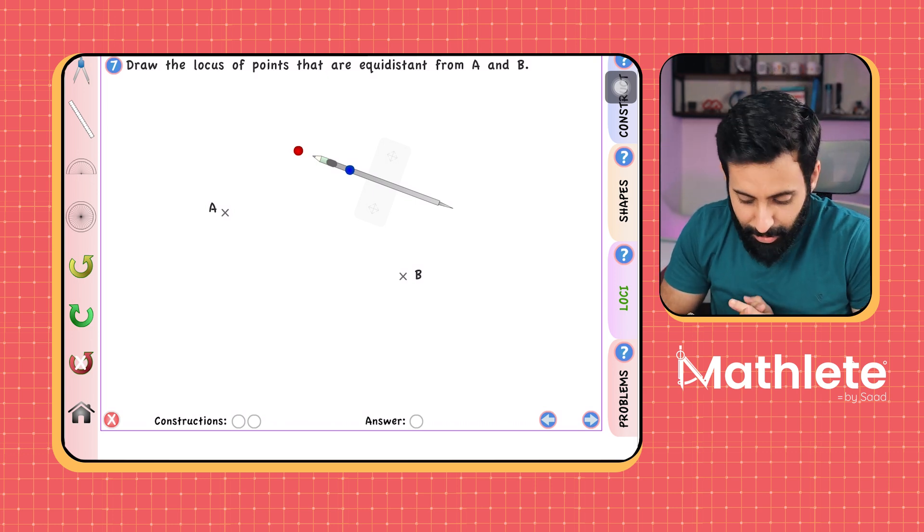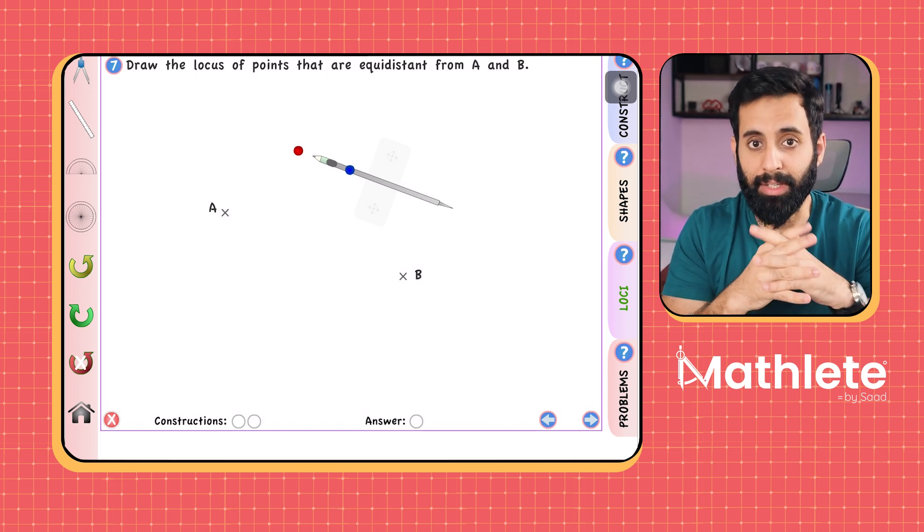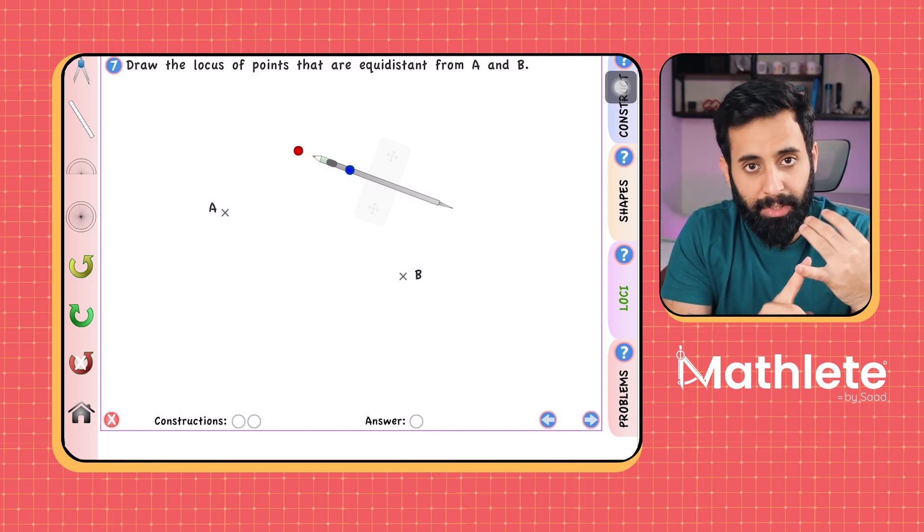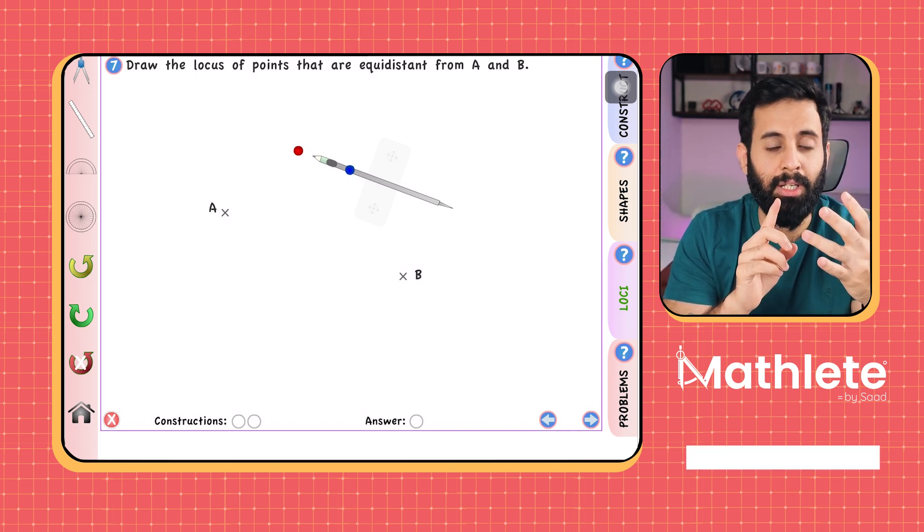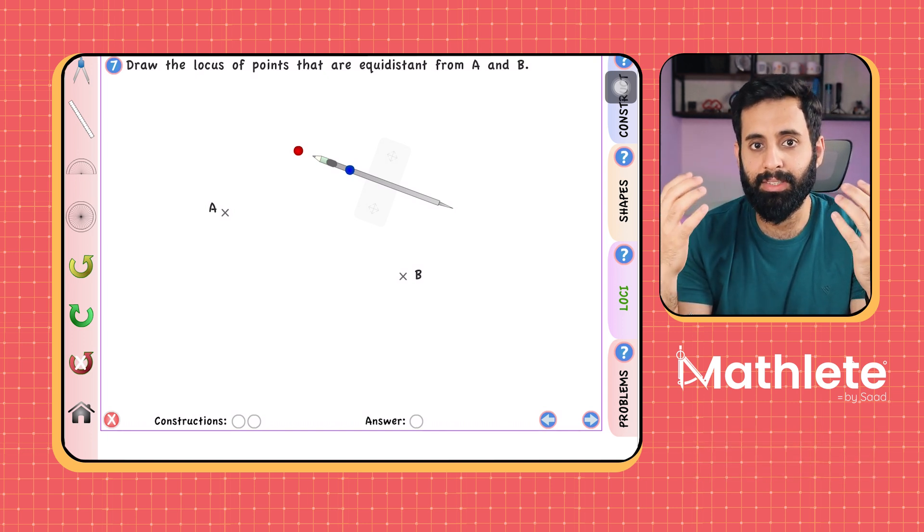So let's learn how to draw a perpendicular bisector. And before that, let's understand what exactly is a perpendicular bisector. So if you look at the two words, perpendicular bisector, perpendicular means making a 90 degree angle, bisect means that it's cutting it into half.